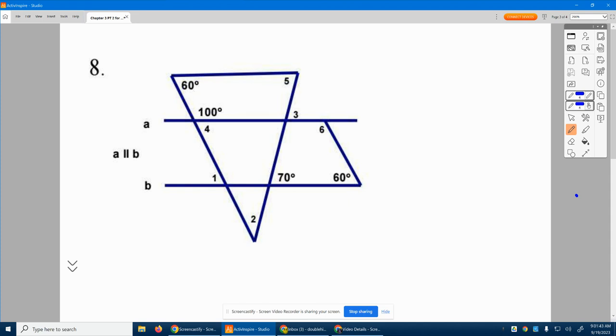I'm going to start right here with this 70. I'm going to fill in around it. If he's 70, since we have a straight line, he's 110. His vertical would be 70, and down here would be 110.